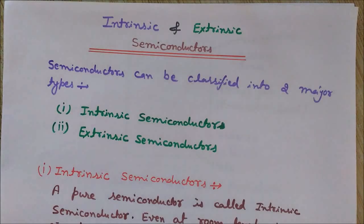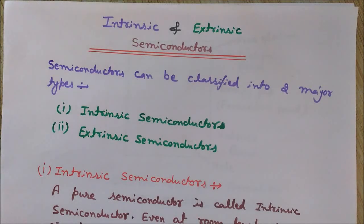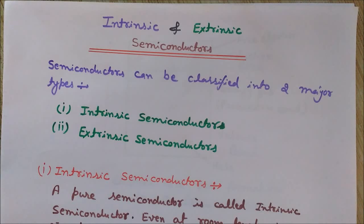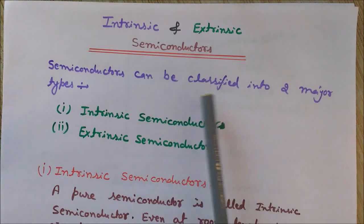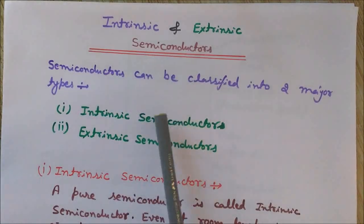Hey, this is Engineering Made Easy and I am Lalith Vasist. Today we will see the intrinsic and extrinsic semiconductors. These are the two types of semiconductors based on the adding of impurities. The pure form of semiconductor is known as intrinsic semiconductor, but when we add some impurity to increase its conductivity so that it can be useful for electronic devices, we call it the extrinsic semiconductor.